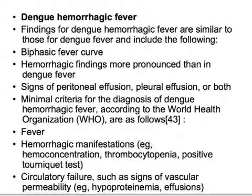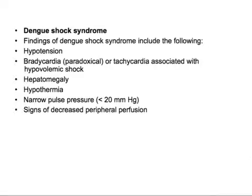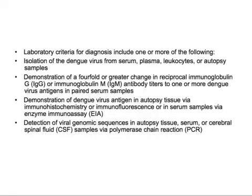Circulatory failure with signs of vascular permeability, hypoproteinemia, and effusions indicate progression. Dengue shock syndrome findings include hypotension, bradycardia or tachycardia associated with hypovolemic shock, hepatomegaly, hypothermia, narrow pulse pressure of less than 20 mmHg, and signs of decreased peripheral perfusion. A patient who initially presented with just fever can land in dengue shock syndrome within four to five days.